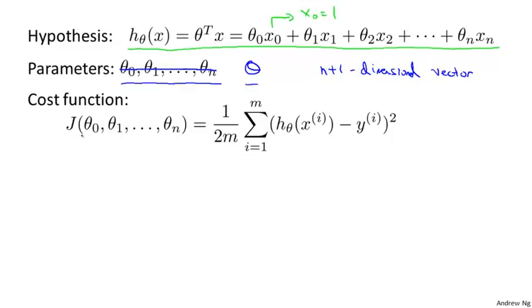Our cost function is J of theta 0 through theta n, which is given by this usual sum of squared error term. But again, instead of thinking of J as a function of these n+1 numbers, I'm going to more commonly write J as just a function of the parameter vector theta, so that theta here is a vector.